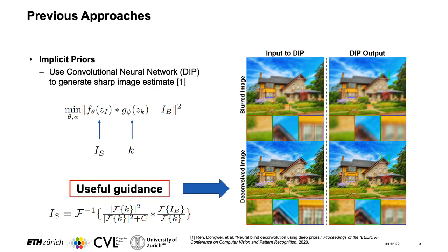Recently it has been proposed to use implicit priors instead of explicit priors. More specifically, it is proposed to use a convolutional network whose architecture is designed in such a way that it favors reconstructing low frequencies compared to high frequencies. This is referred to as DIP and it has been successful in removing high frequency artifacts such as noise. With the implicit prior we only have the data-fitting term. However, the problem with DIP is that it does not favor reconstructing sharp images over blurry images.